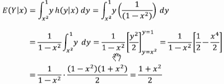That equals 1 over 1 minus x squared. Integrating the y, we get y squared over 2, and we need to evaluate that at y equals x squared and y equals 1.